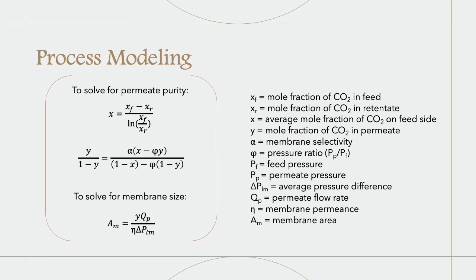The first two equations here solve for the mole fraction of the CO2 in the permeate Y. The equation on top gives the average CO2 mole fraction between the feed and retentates. The second equation is slightly more complicated and required using the solver function in MATLAB in order to solve for Y. This equation involves the membrane selectivity alpha, which tells us how well the membrane will separate CO2 from N2. Material balances were then used to find any other relevant values needed to put into Aspen.